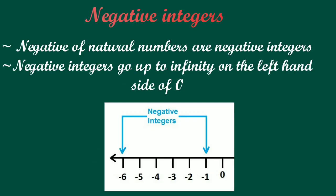Negative of natural numbers are negative integers and negative integers go up to infinity on the left hand side of zero.